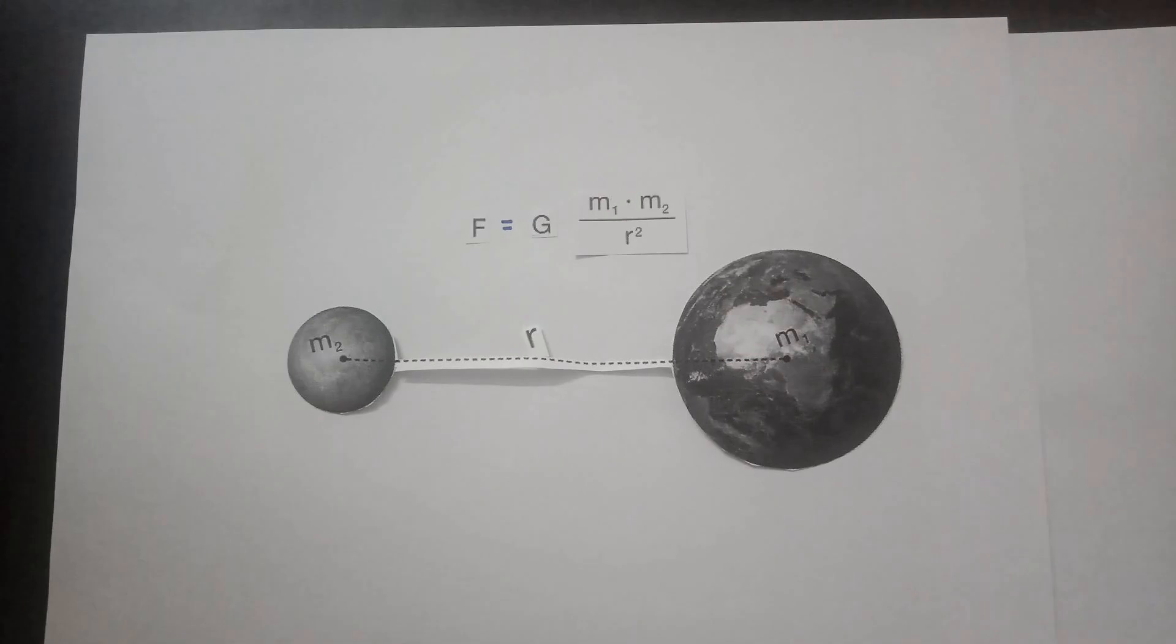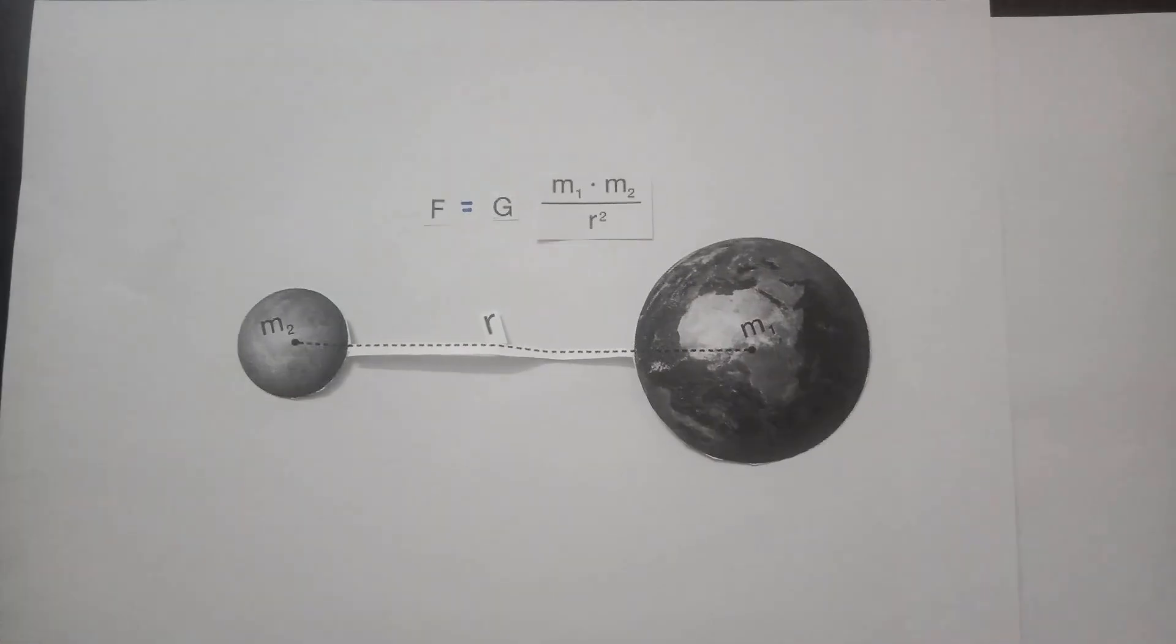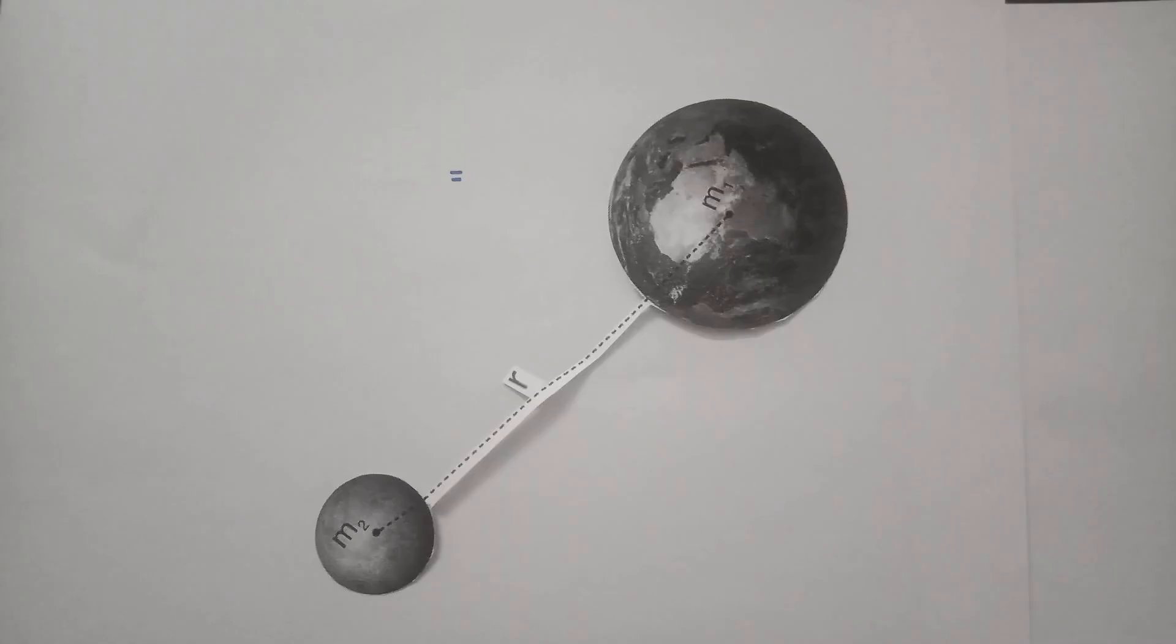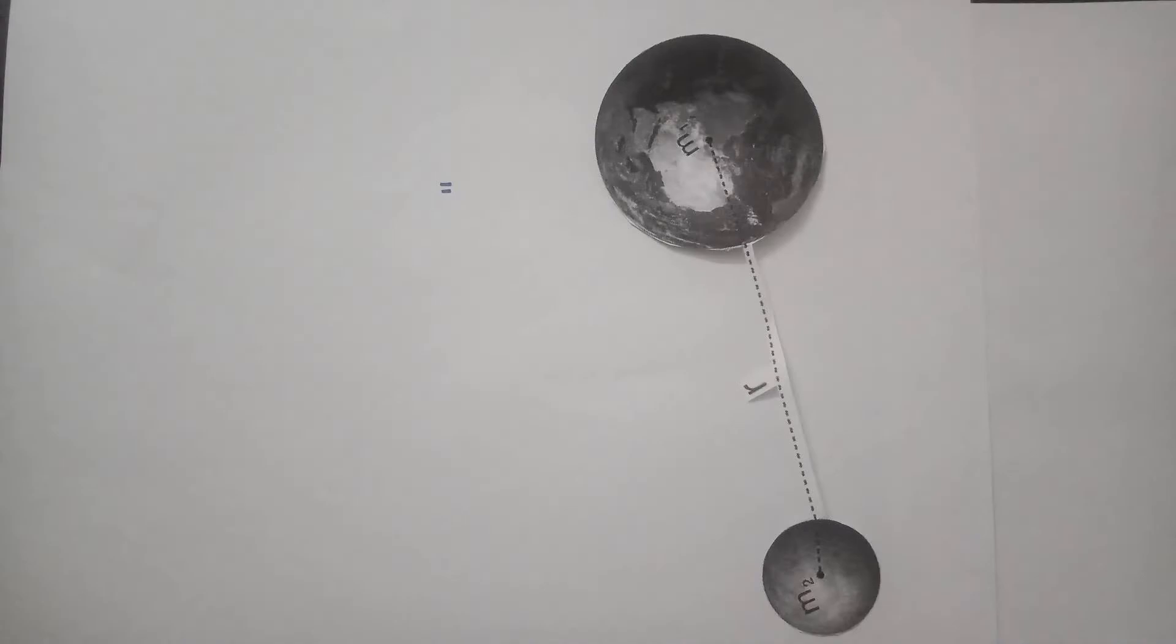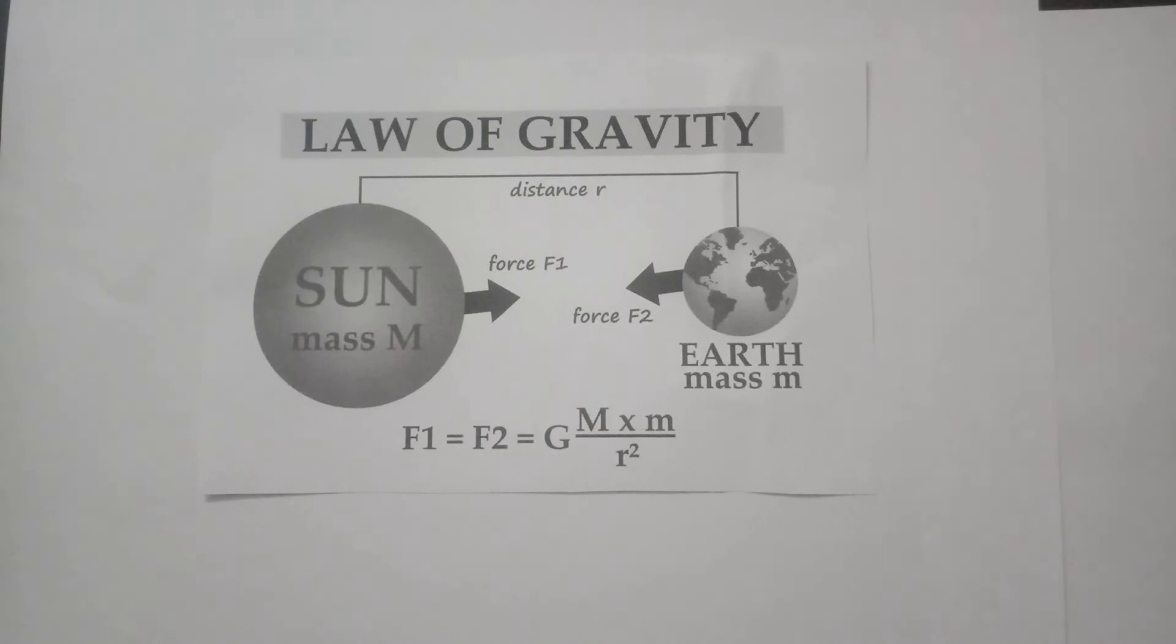Any two objects, say for example if Earth has mass m1 and Moon has mass m2, then the formula we had given was for gravitation.